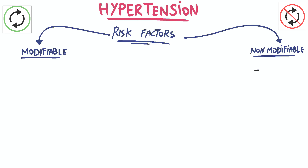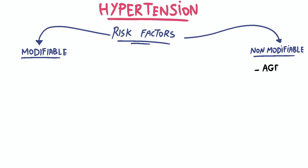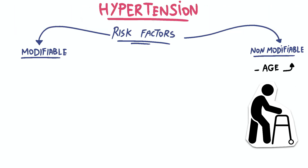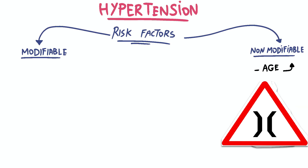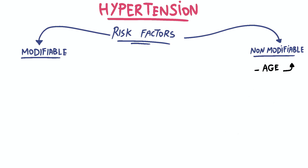Modifiable factors are those that can be changed or controlled, while non-modifiable factors are inherent and cannot be changed. One non-modifiable risk factor is age — as individuals grow older, blood vessels tend to lose their elasticity and become stiffer, leading to increased blood pressure. This is why hypertension becomes more common with advancing age.